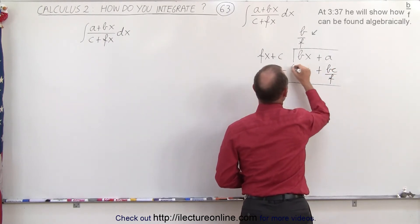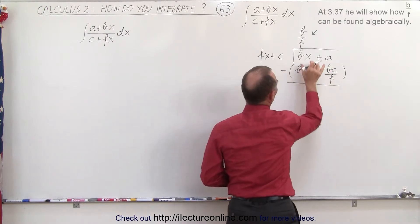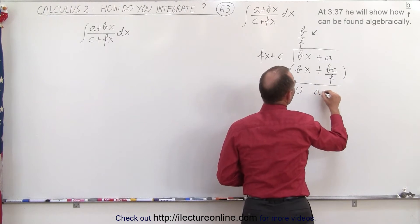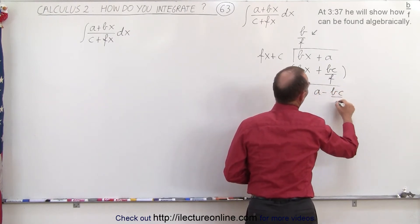Now we're going to subtract this from that. So bx minus bx, which is zero, and this minus this gives us an a minus bc over f.